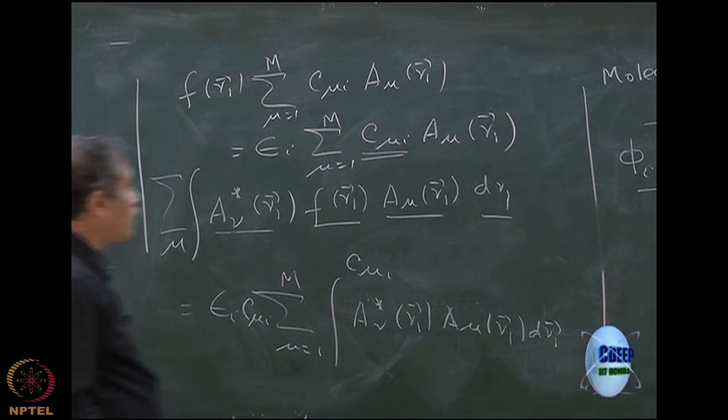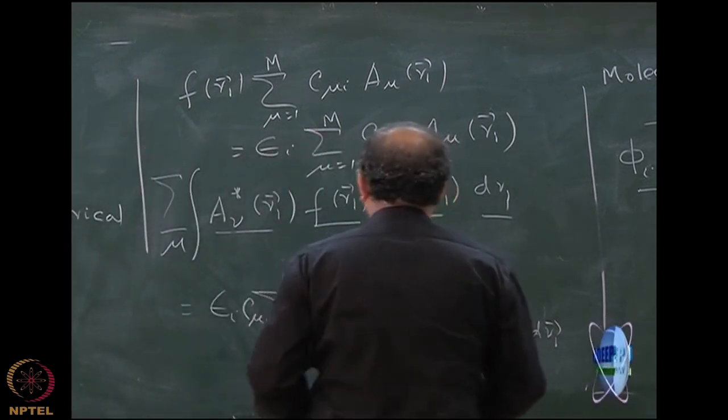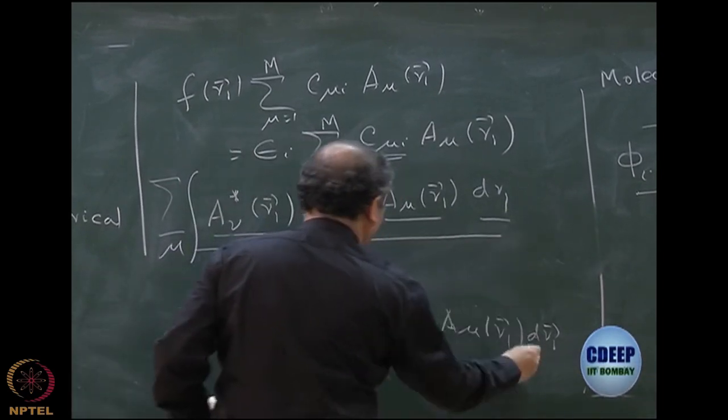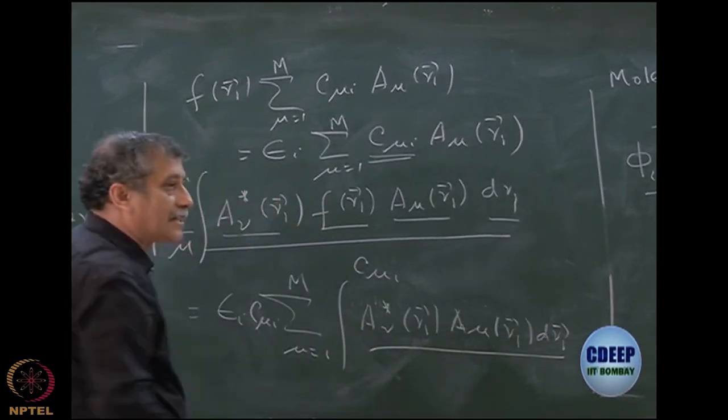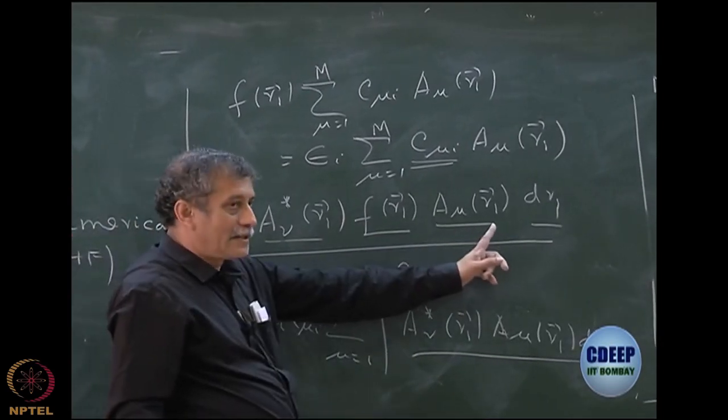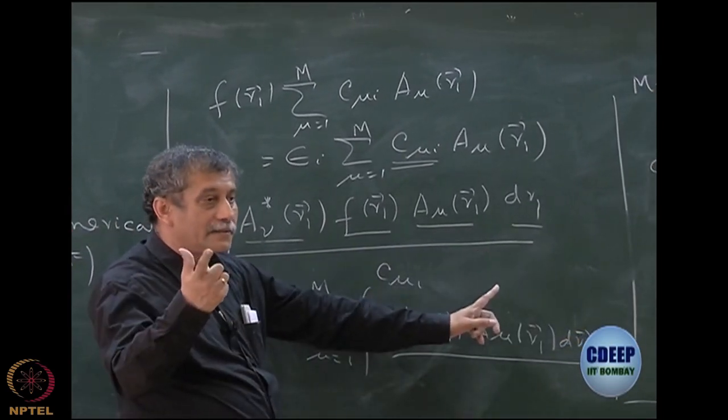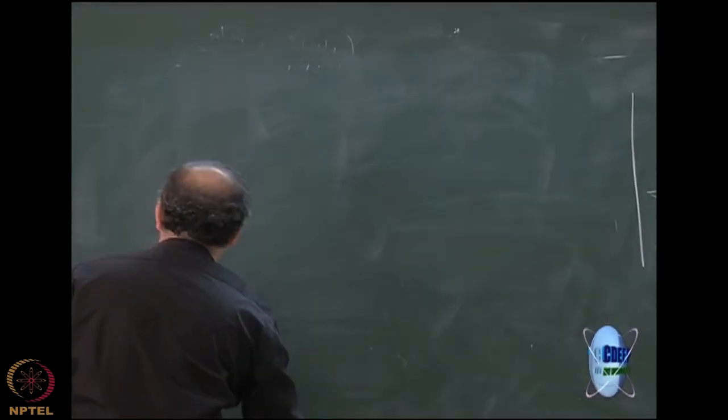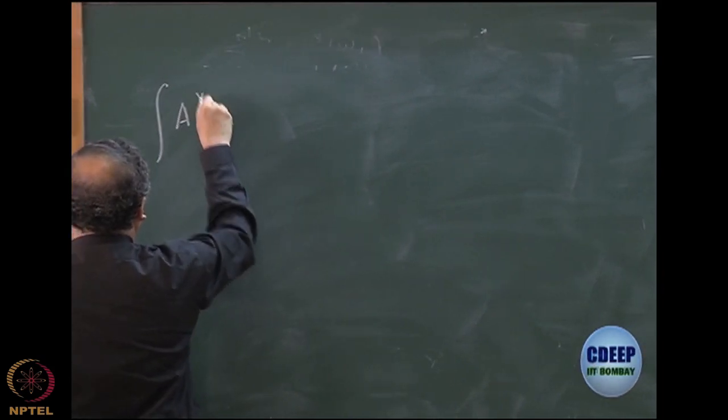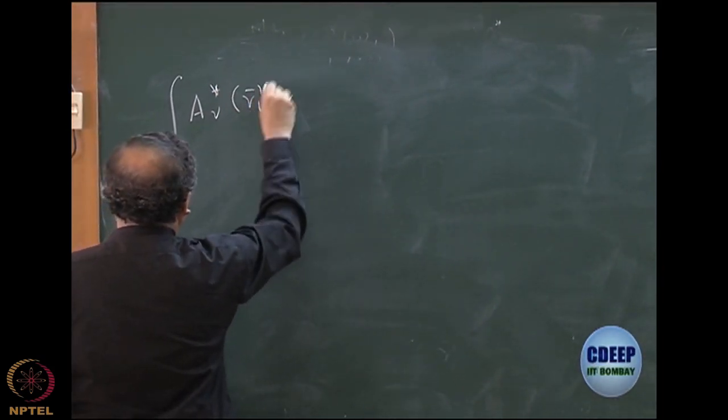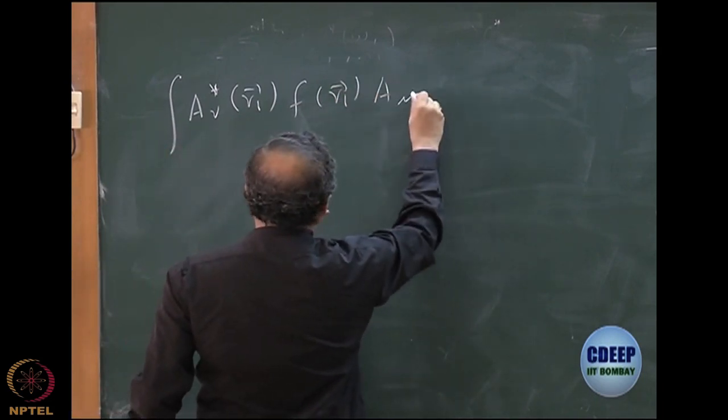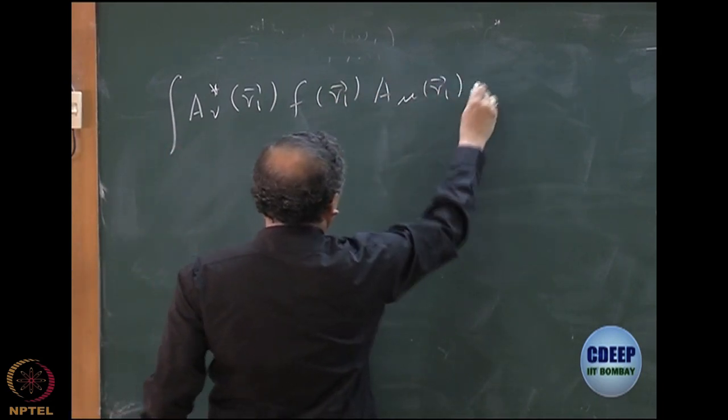Do the same thing on the right-hand side, obviously. So epsilon I sum over mu equal to 1 to M, again C mu I can come outside and then you have an integral nu star R1, A mu R1, DR1. That becomes my equation.